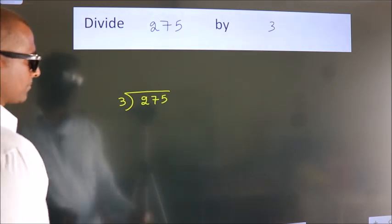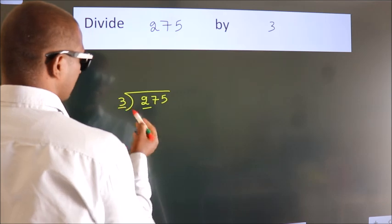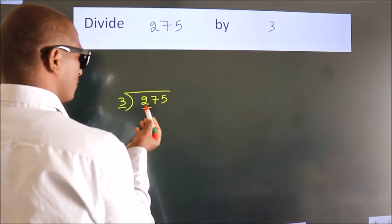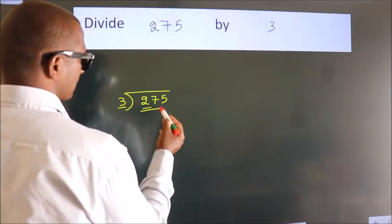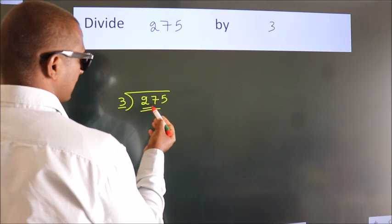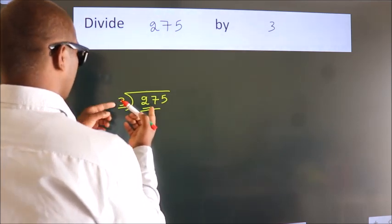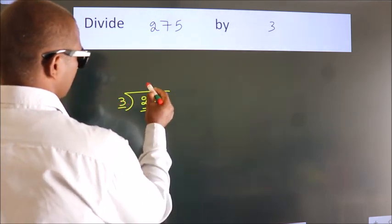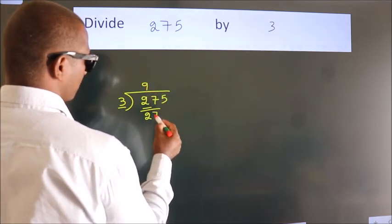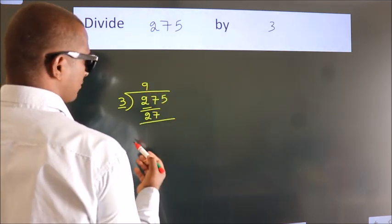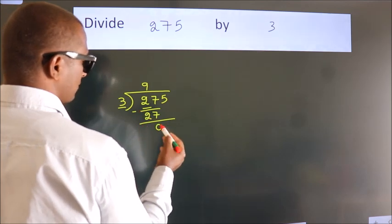Here we have 2, here 3. 2 is smaller than 3, so we should take 2 numbers: 27. In the 3 times table, 3 nines are 27. Now we should subtract. We get 0.